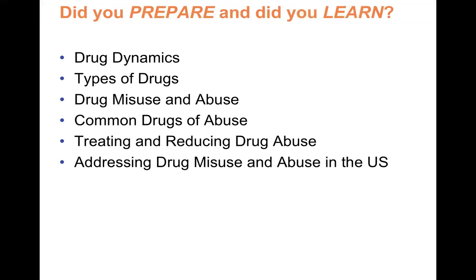The big areas I'm going to cover today are: drug dynamics — how drugs are working in your brain, how they impact your brain and affect the reward center where they block the uptake of certain neurotransmitters. We're going to go over types of drugs: prescription, over-the-counter, recreational, and illicit. And the different drug categories: stimulants, cannabis, narcotics, depressants — all on page 368. We'll also cover common drugs of abuse, treating and reducing drug abuse, and drug abuse in the United States. We have an opiate epidemic, and here in Kern County we have a very high use of meth. It really does impact our community.